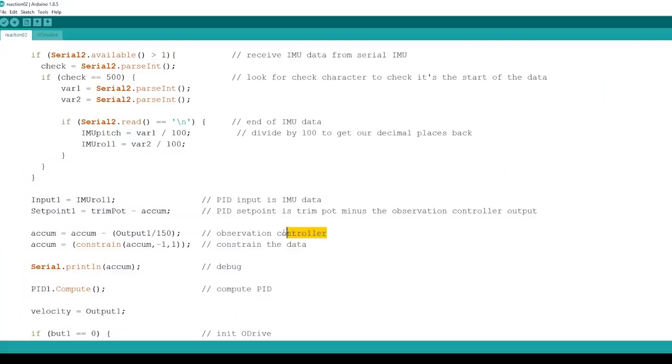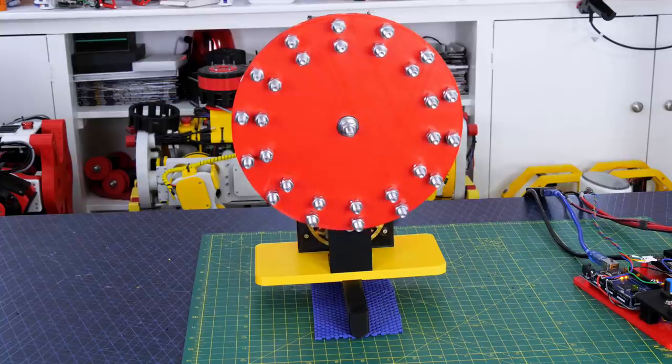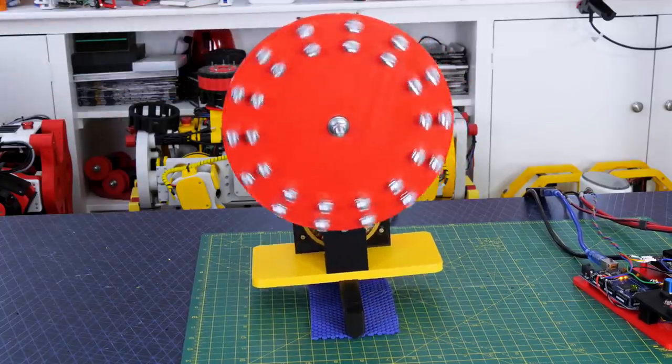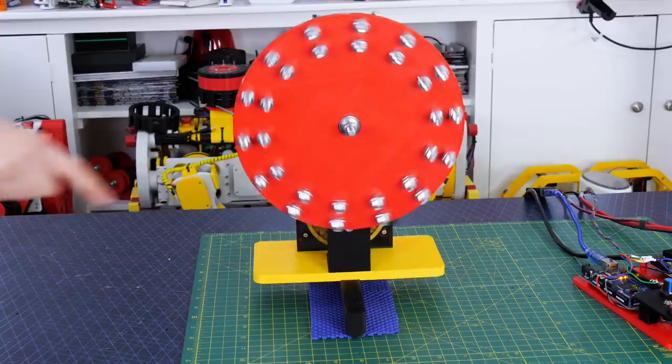To fix this I built a crude observation controller. This accumulates any velocity output values from the PID output on each loop of the code. I've divided this value right down so it doesn't grow too quick and constrained it to plus minus one. This value is then taken away from the set point which is the angle I want it to balance at. So now it constantly moves the balancing point the other way as the velocity increases too much. This makes it far more stable and predictable.